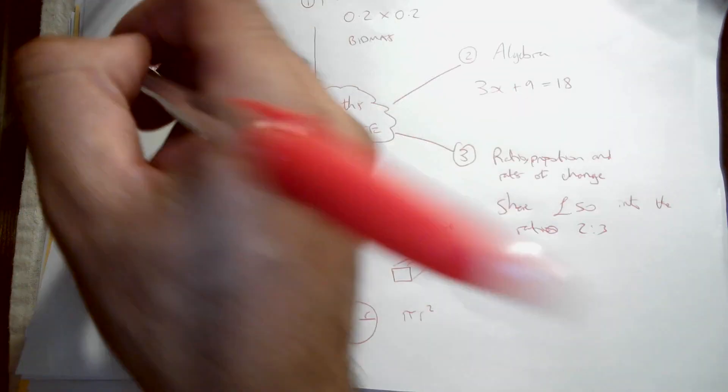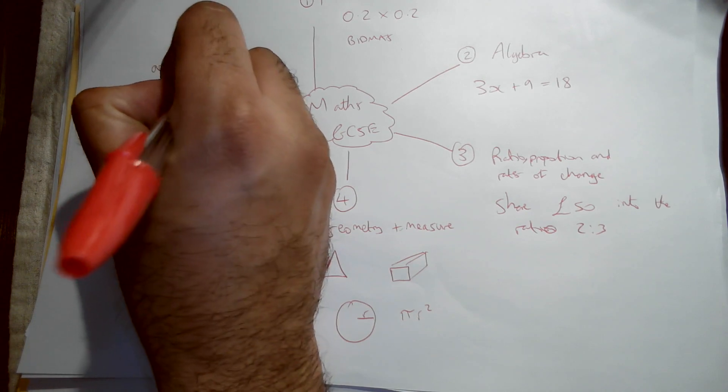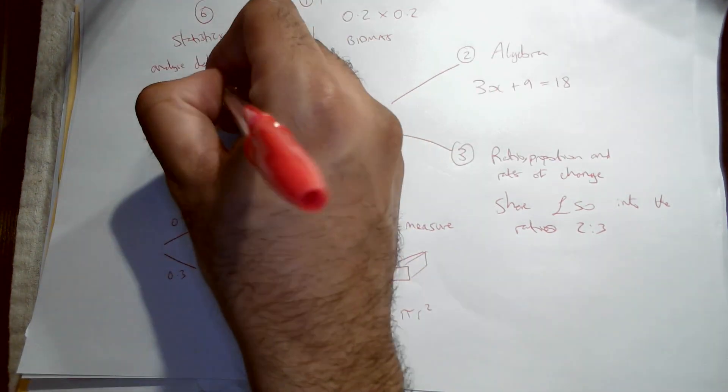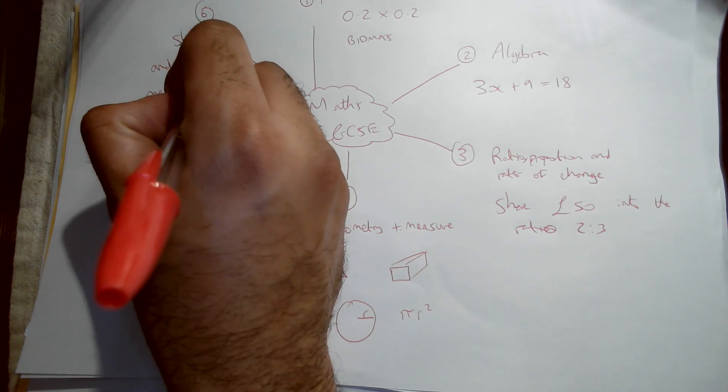So a very simple one can be mean, median, mode, and range.